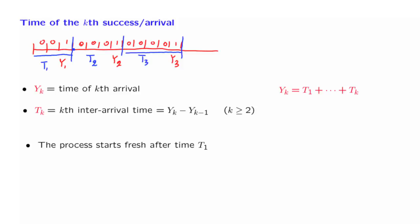Furthermore, because the process starts fresh, whatever happens in the future after this time is independent from whatever happened in the past. And so the random variable t2 will be independent from t1. And then by a similar argument, t3 will be independent from t1 and t2, and will also have the same geometric distribution.